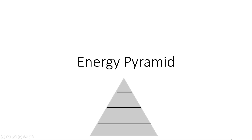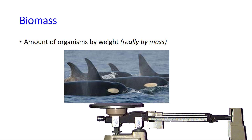Let's discuss the energy pyramid and energy flow. First off, biomass is the amount of organisms by mass. So if we took a scale and weighed all the killer whales in an ecosystem, that would be the biomass of killer whales.